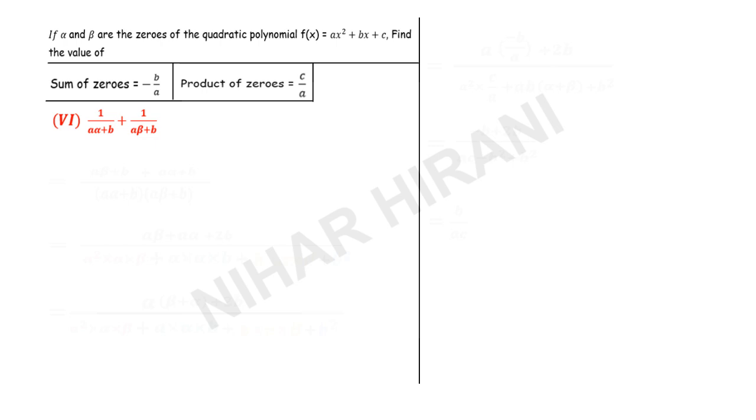Let us solve this question really very fast. Alpha and beta are the zeros of the quadratic polynomial ax squared plus bx plus c. Find the value of these two. I already know sum of zeros is minus b upon a and product of zeros is c upon a respectively.